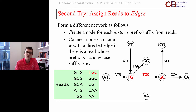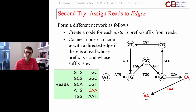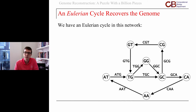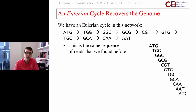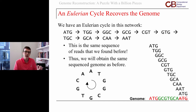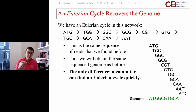For example, if you start at AT and walk to TG, that is the read ATG. Then you can continue to TGG or TGC and you still see the overlap. The difference is that the reads are now on the edges. There is an Eulerian cycle in this network — for example: ATG, TGG, GGC, walking around the square, then back through TGC, over to CA, then through CAA and AAT. That's the exact same sequence of reads as before. We can write out the reads corresponding to those edges, overlap all of them, infer the genome at the bottom, and reconstruct that circular genome.